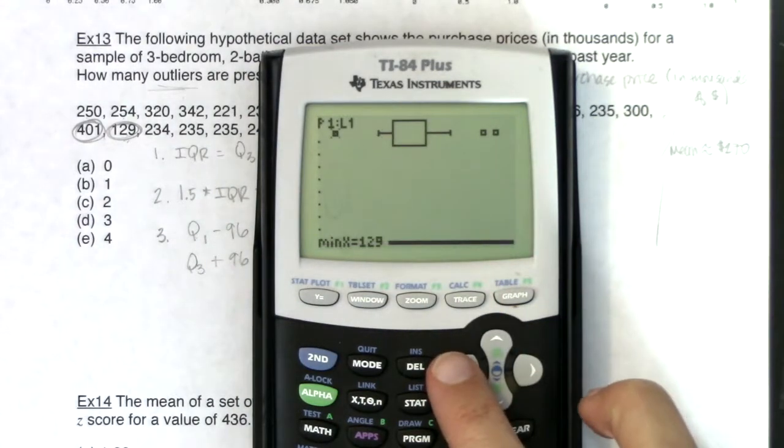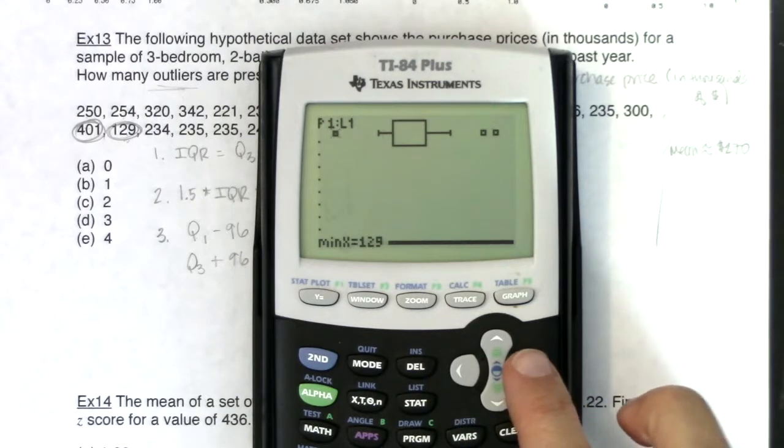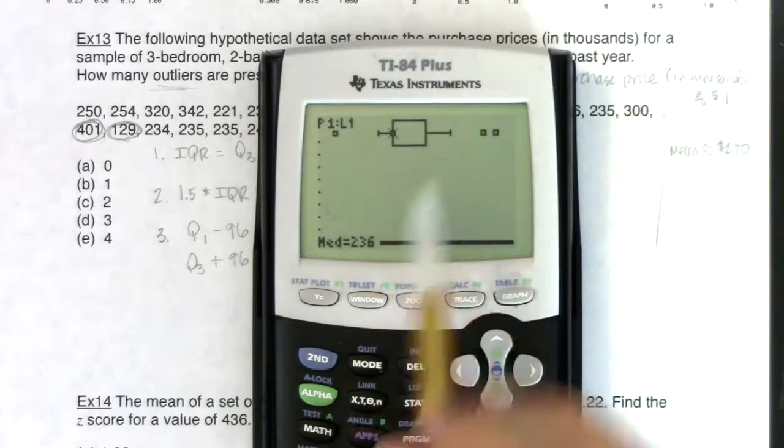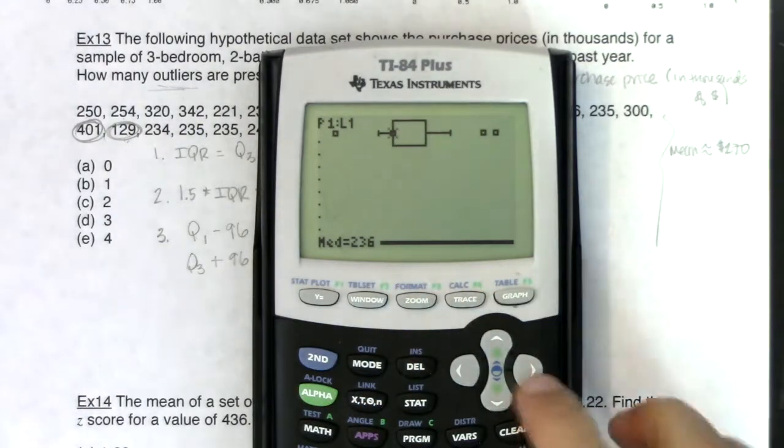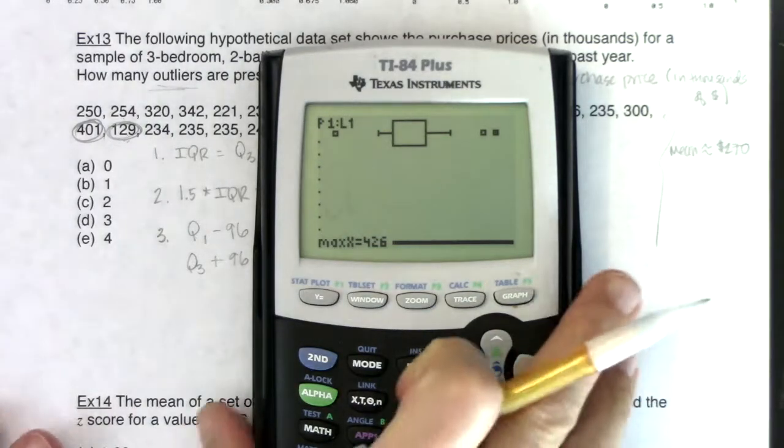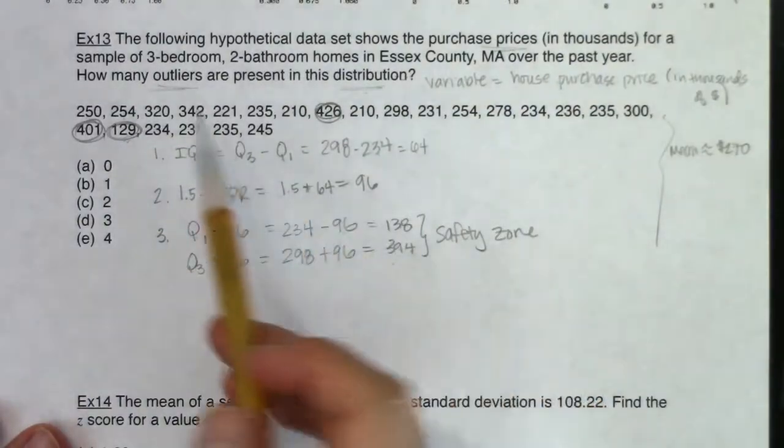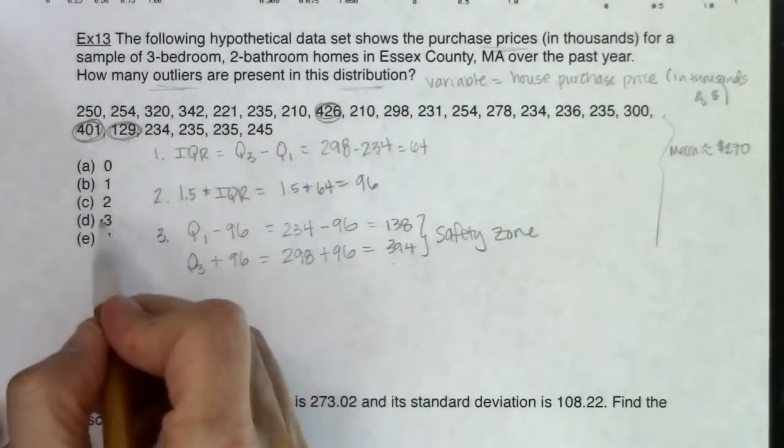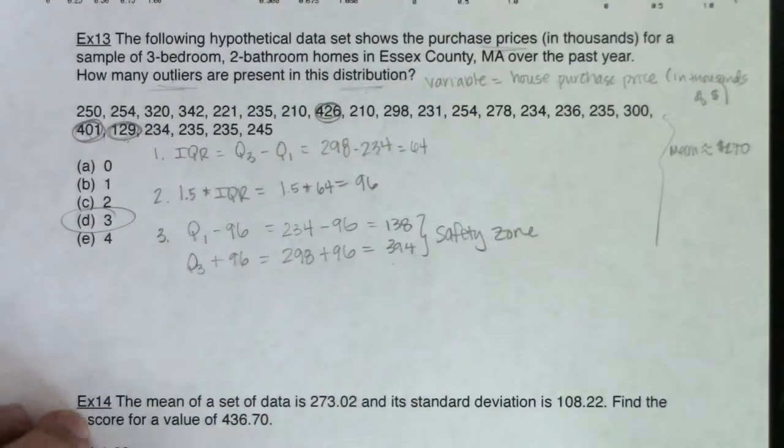So you can see if I hit trace, there's my outlier at 129. My lowest non-outlier was 210. There's Q1 at 234. There's the median of 236. And they barely look like there's any difference because of the scale of my graph. And then we head up to the highest non-outlier of 342. And then 401 and 426 are outliers. All right, but let's answer this question. This question actually said how many are present? Well, I have three outliers present. So my answer is D.